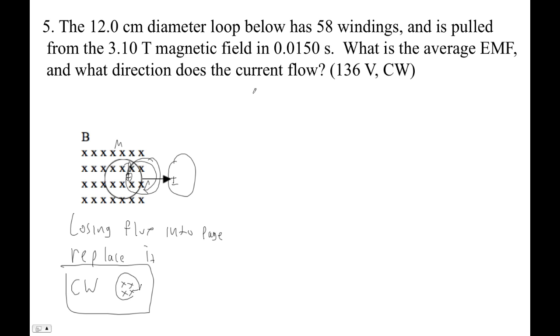So let's solve for the EMF. EMF is going to be NBA over T. There's a minus sign that I generally ignore. So what do we have here? That's going to be 58 windings. Our magnetic field is 3.1 Teslas.